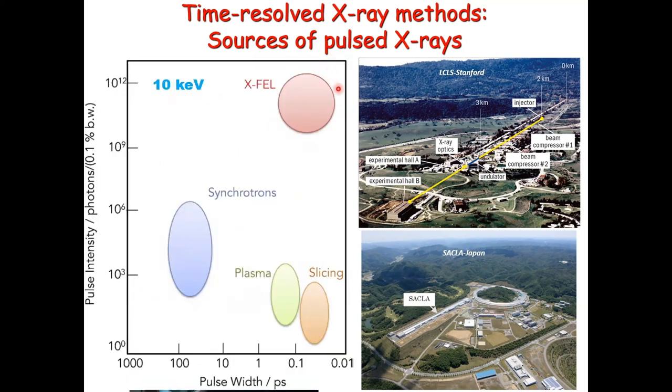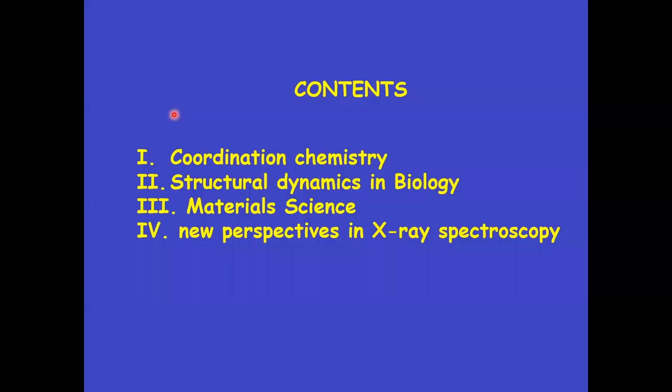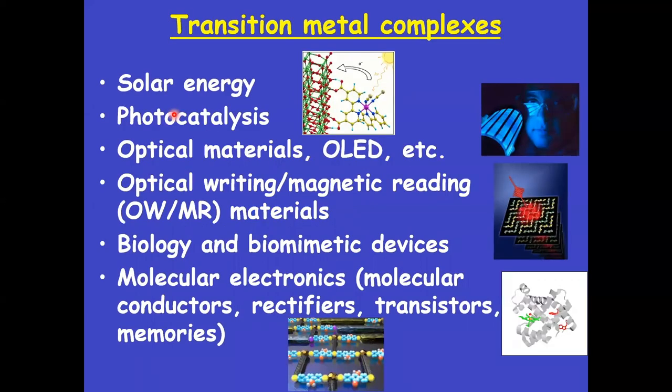Compared to synchrotrons, you gain six orders of magnitude more flux with an X-ray free electron laser, and three orders of magnitude shorter pulses. If you compare it to the slicing in synchrotrons, you get 10 orders of magnitude gain in photon flux. So this is a game changer. I'm talking about hard X-ray photons here. I'll give you some examples of what we did over the years.